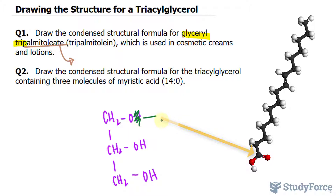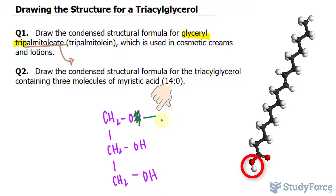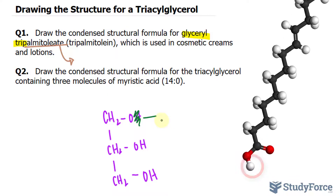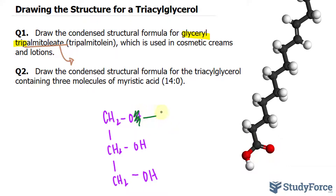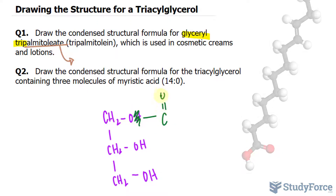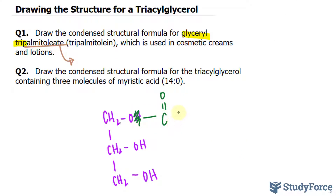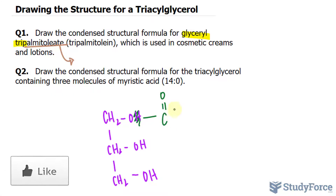What happens is that this hydroxyl and the hydrogen here produce a molecule of water. And an ester bond forms between the carbonyl and the glycerol's oxygen. In case that's confusing, here's what I mean: we have carbon double bonded to oxygen and the rest of the molecule.